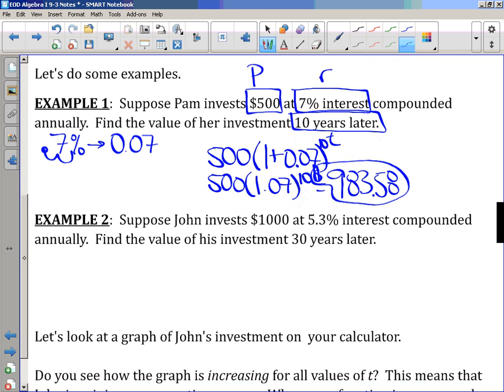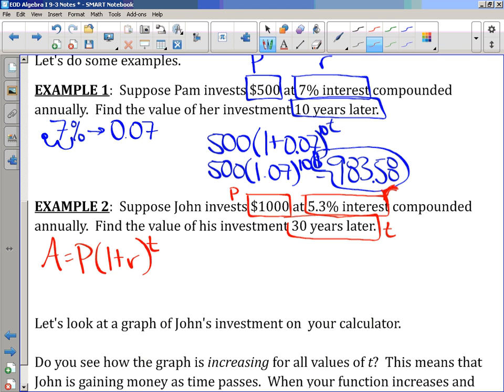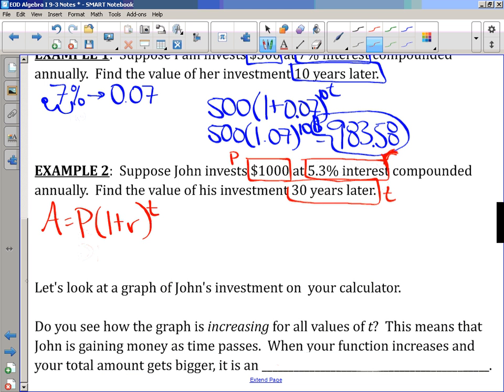Let's look at another one. Suppose John invests $1,000 at 5.3% interest compounded annually. Find the value of his investment 30 years later. So, again, 1,000 is P, our principal. 5.3% interest is R. And then, 30 years later would be T. So, again, our formula, since you can't see it on your papers, but just so that we can practice it. I'll have written it down again. So, 1,000 goes in for P. 5.3% turns into 0.053 as a decimal.